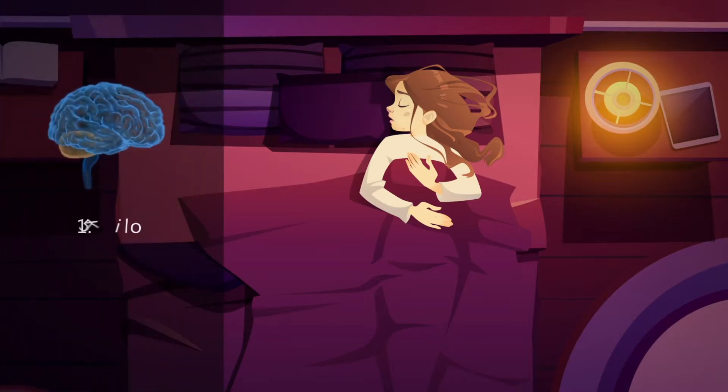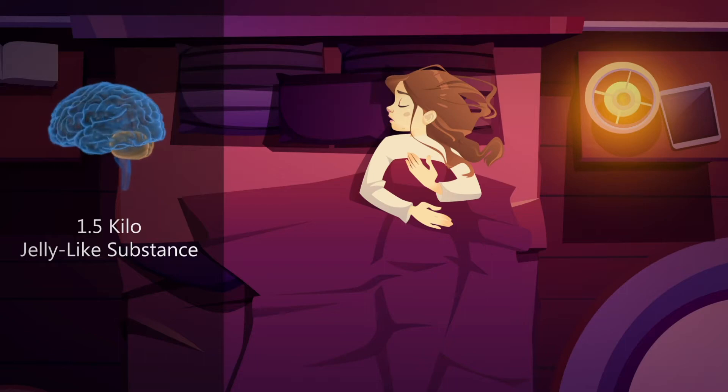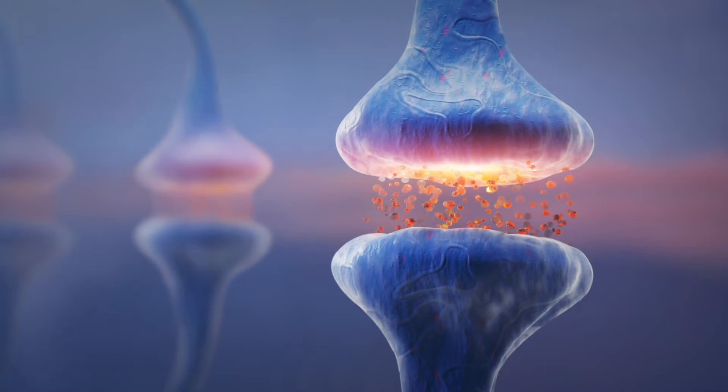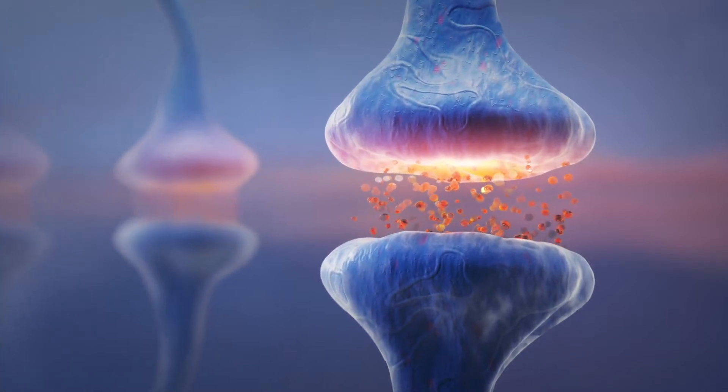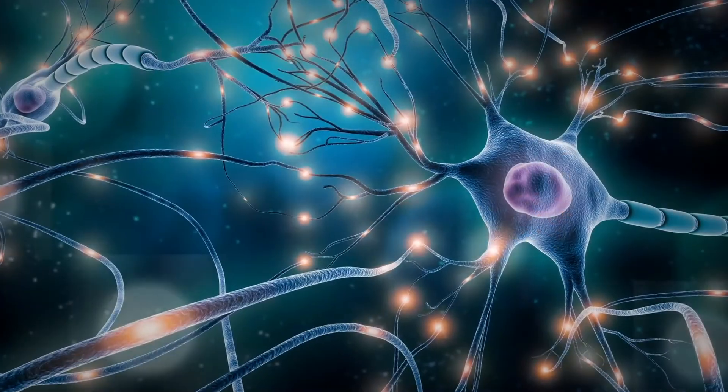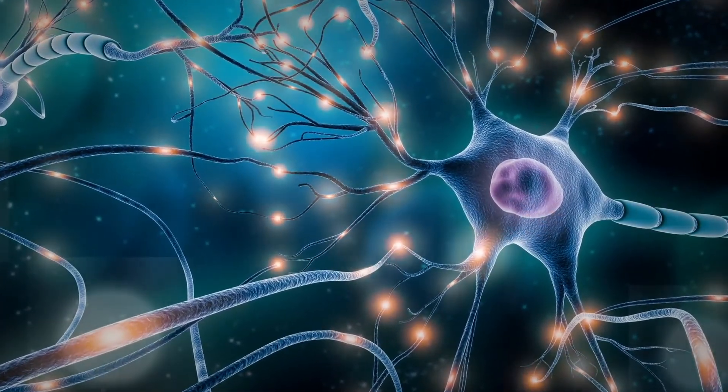Our brains are about one and a half kilos of jelly-like substance containing more than one trillion neurons. Everything we feel, think, or do is the result of the action of these neurons. These actions produce electrical activities or brainwaves that we can measure by EEG, electroencephalography.